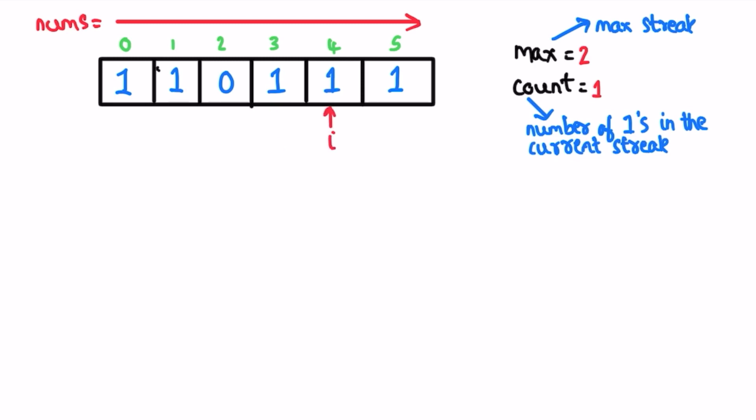The next element is also one, so increment count. Count is now two. Max of max and count is two comma two, so max will remain two. Go for the next element, it is also one, so increment count. Max of max and count is 2 comma 3. Max among 2 comma 3 is 3, so change max to 3.